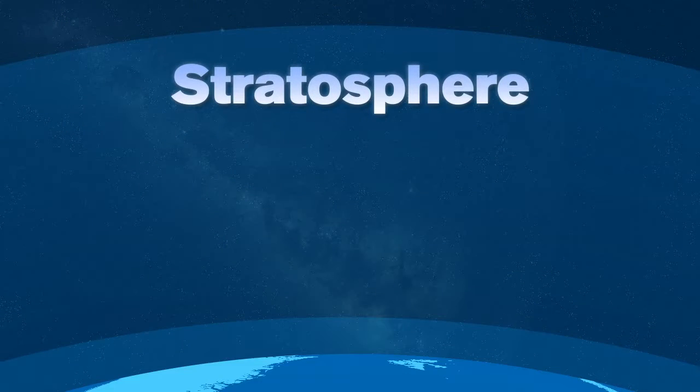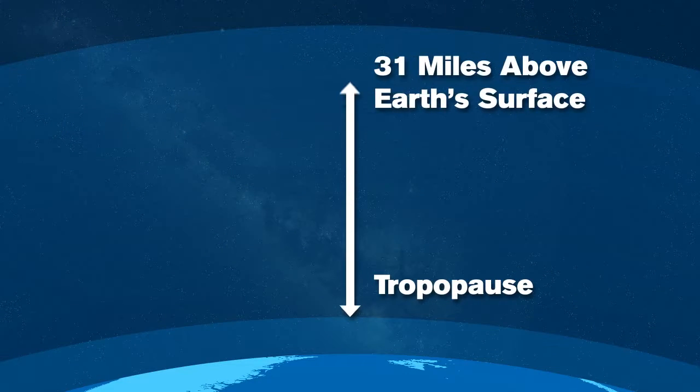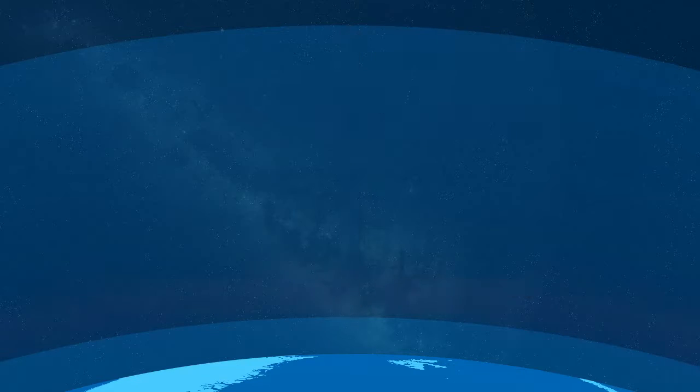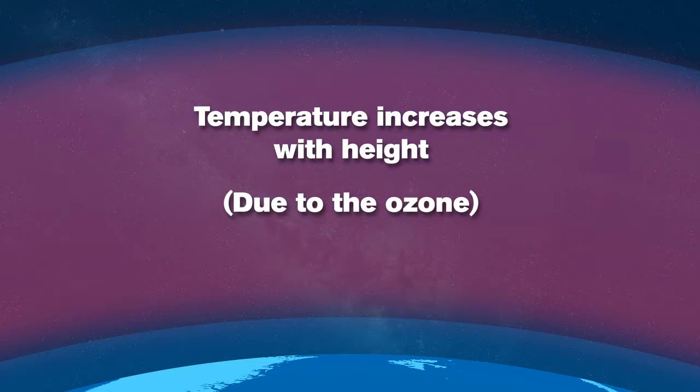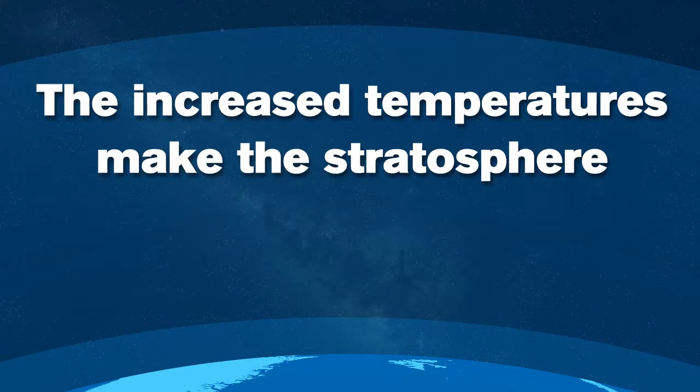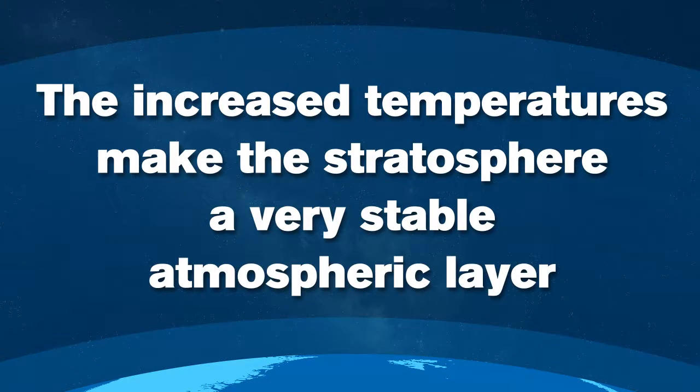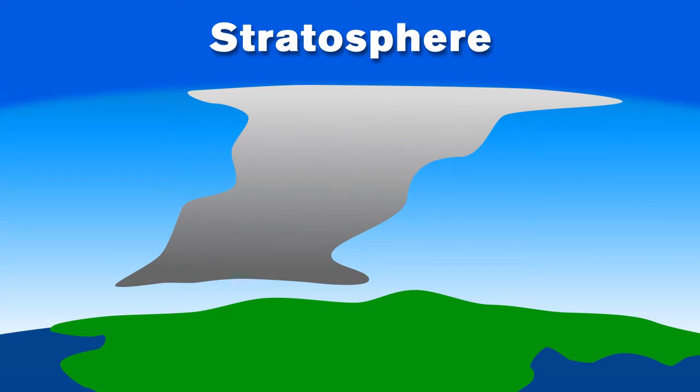The stratosphere extends from the tropopause up to about 31 miles above the Earth's surface. In this layer, temperature increases with height due to the creation of ozone that's present in this layer. The increased temperatures make the stratosphere a very stable atmospheric layer and give thunderstorms their famous anvil-shaped tops.